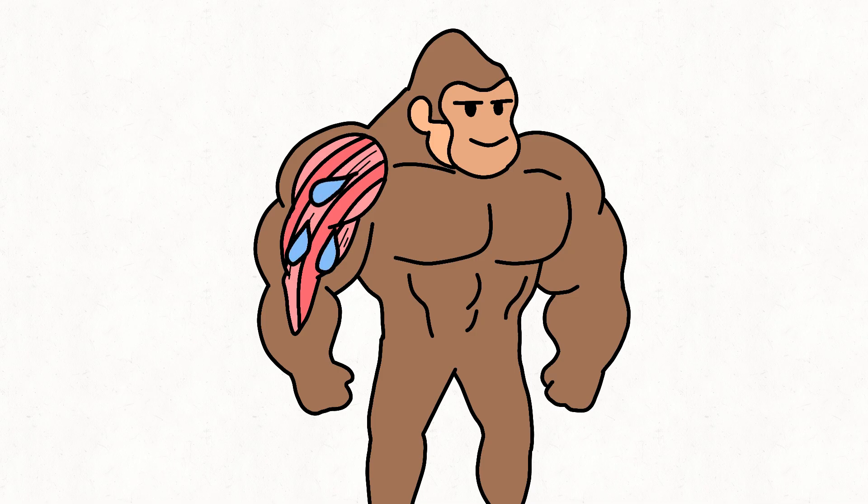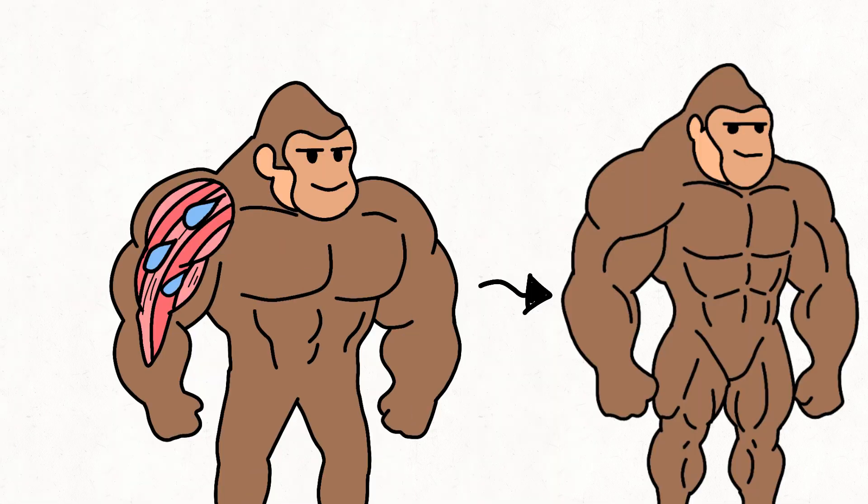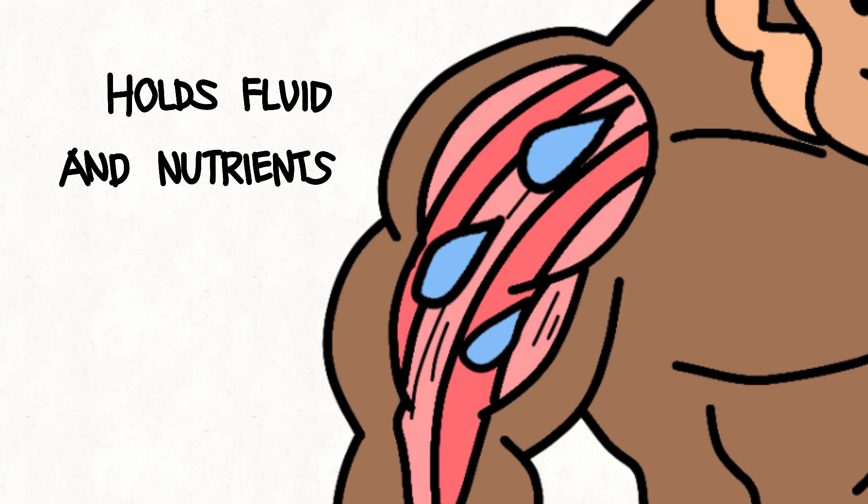Creatine also pulls more water into muscle cells. This cell volumization tells the body, we're growing, better build stronger walls. Muscle fibers repair bigger and fuller. That's why after 2 weeks, monkey looks more pumped even without adding fat. Muscles literally hold more fluid and nutrients.